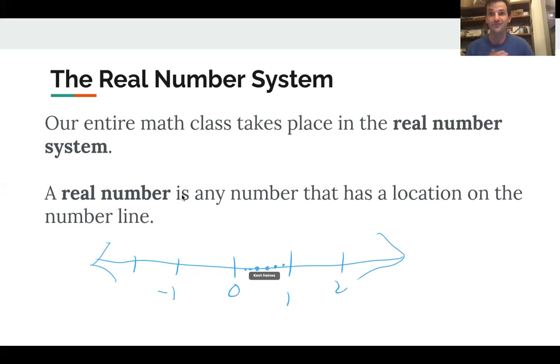So the only number that I can think of to tell you that's not a real number is the idea of infinity. Because infinity is not a place on the number line, you can't point to where infinity is. You might say it's all the way down at the end, but can you put your finger eventually on a point on the number line where infinity is? And the answer is no. So it's not a real number. And so we don't really deal very much with infinity in our math class.